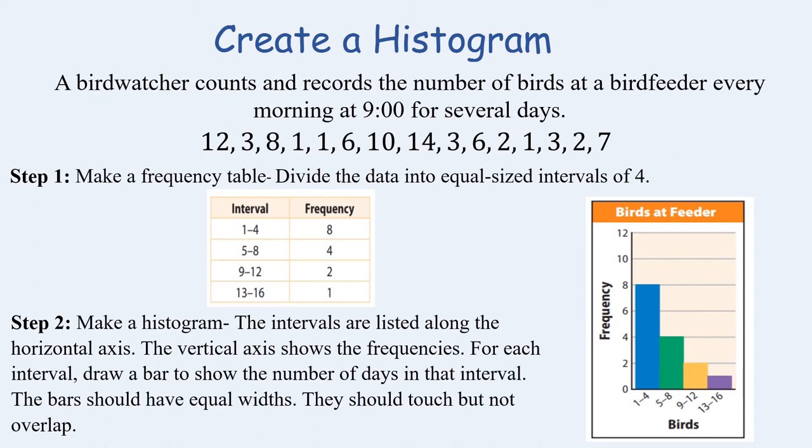The bars should have equal widths. In this case their intervals of 4 and they should touch but not overlap. That is also a difference between a bar graph and a histogram. So let's try and create one on our own.